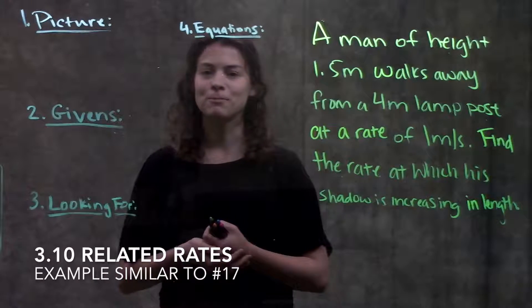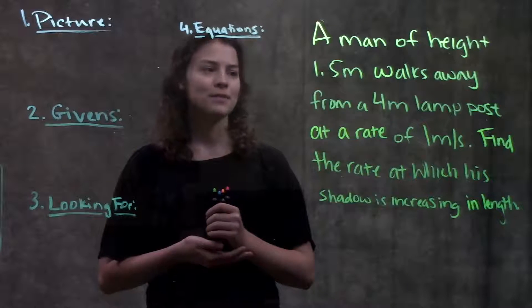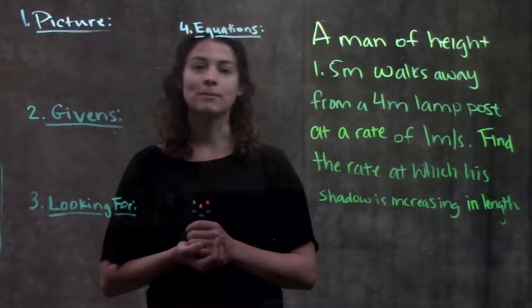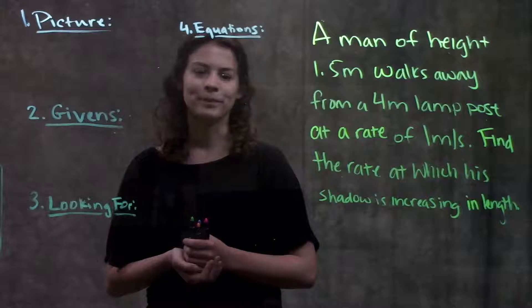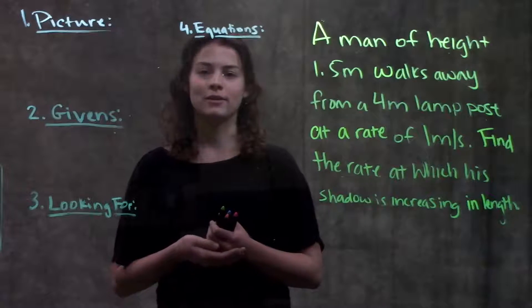This is really similar to number 17 in your book and it tells us a man of height 1.5 meters walks away from a 4 meter lamppost at a rate of 1 meter per second. Find the rate at which his shadow is increasing in length.